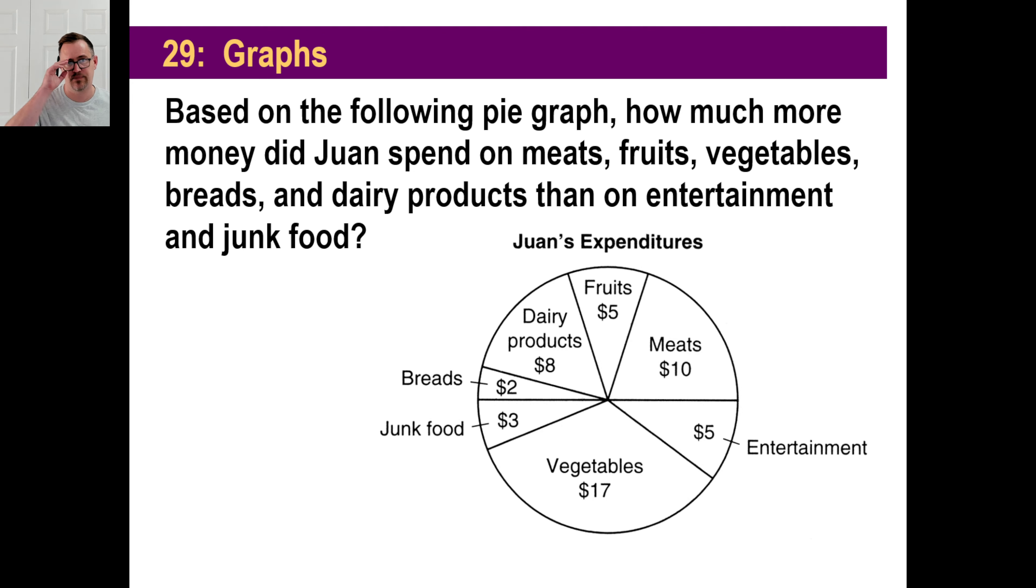Let's read this one. Based on the following pie graph, how much more money did Juan spend on meats, fruits, vegetables, breads, and dairy than on entertainment and junk foods? We're going to have to make a calculation based on how he spent on all those things. So let's figure out entertainment and junk food first. Entertainment's $5, junk food is $3. So that's $8 total.